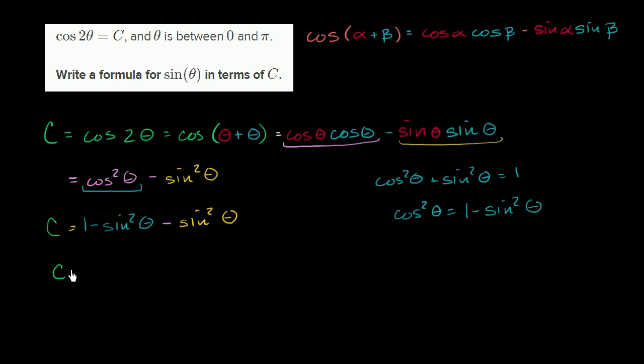Or we could get that c is equal to 1 minus 2 sine squared theta. And what's useful about this is now we just have to solve for sine of theta. So I could multiply both sides by a negative just so I can switch the order over here. So I could write this as negative c is equal to 2 sine squared theta minus 1.